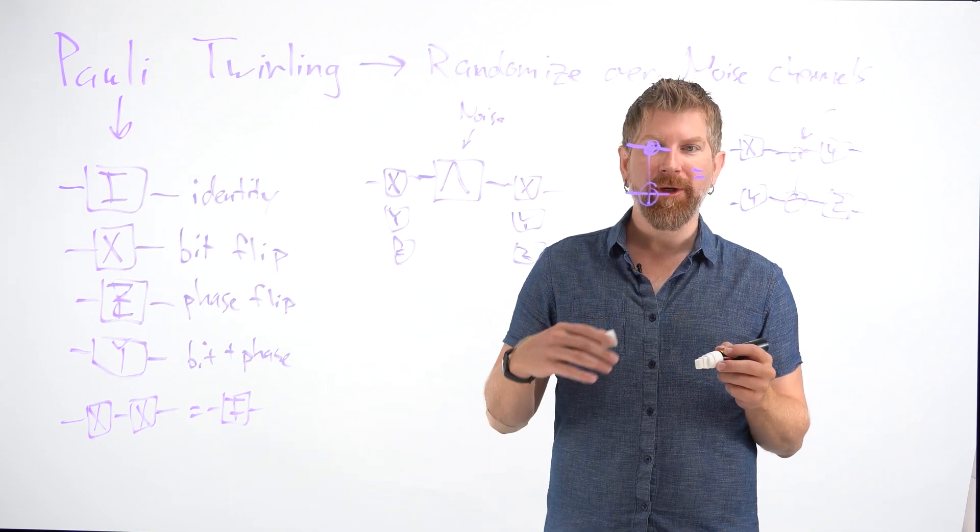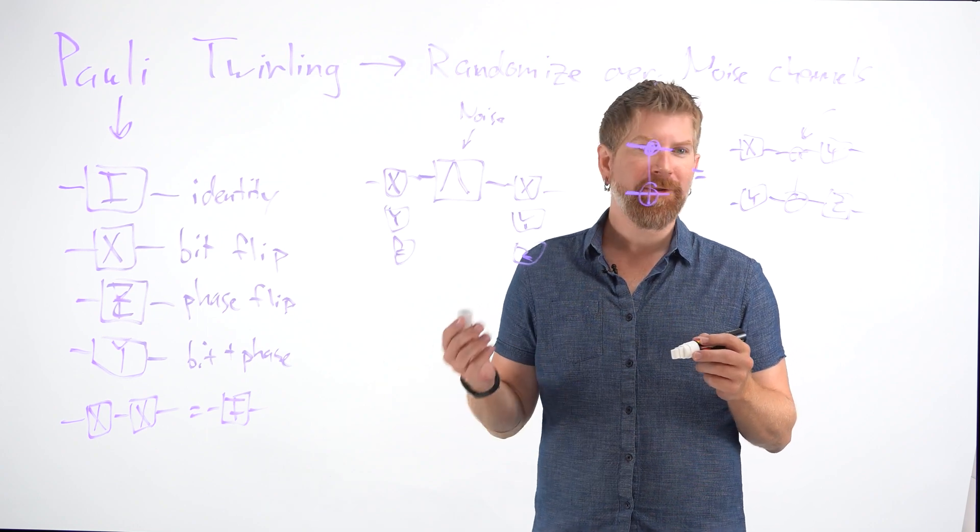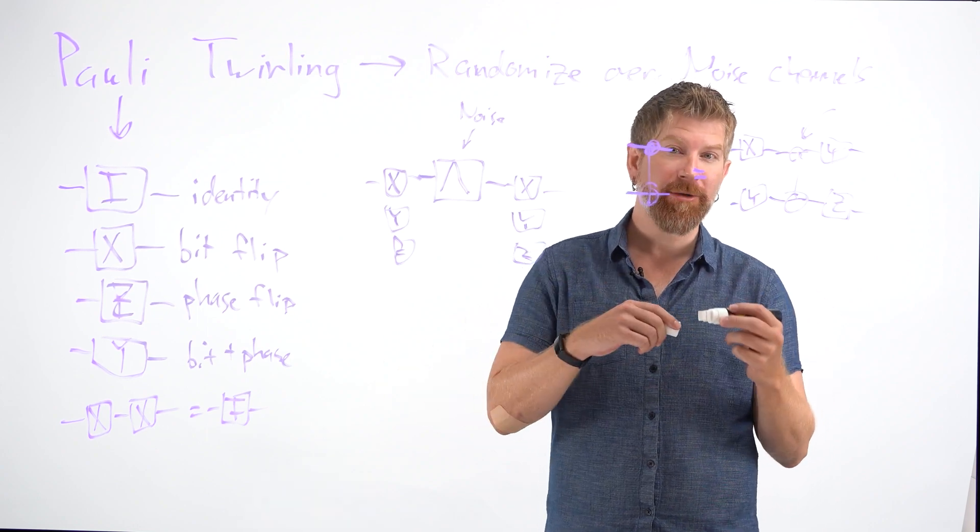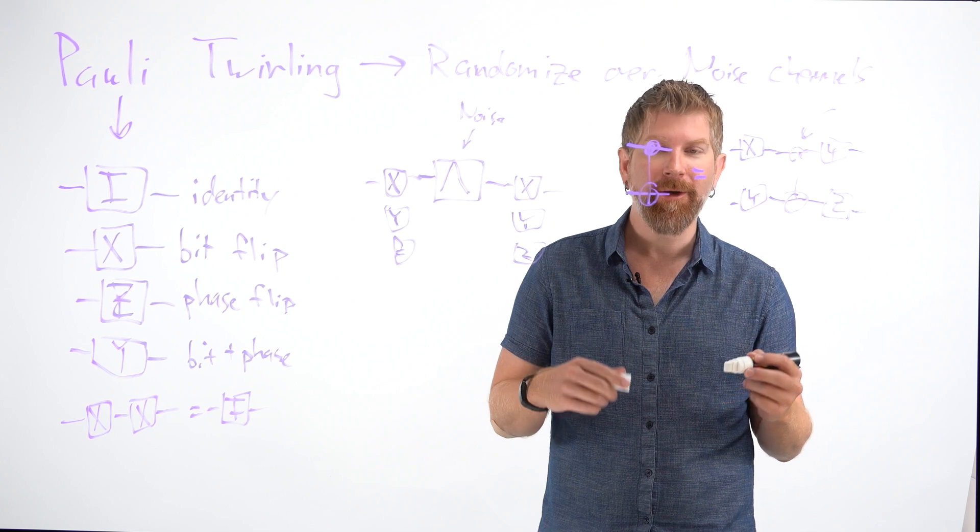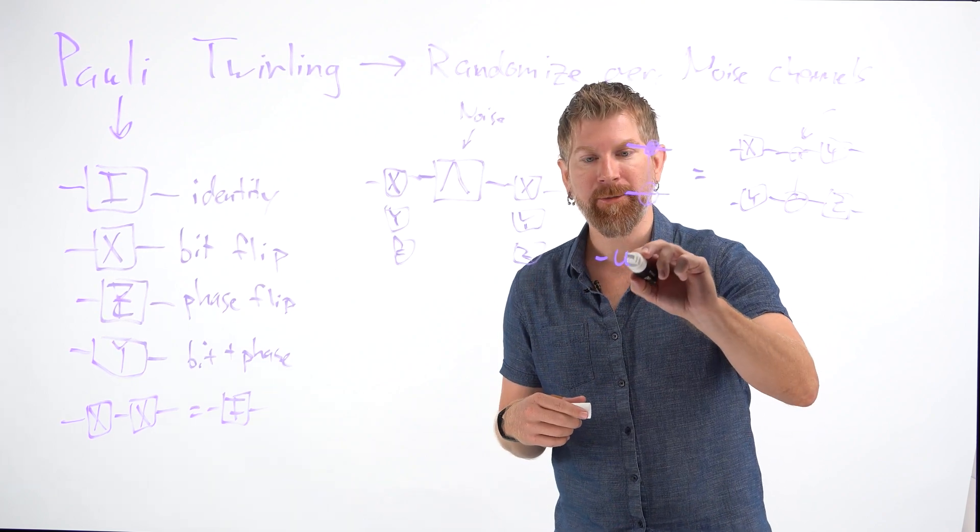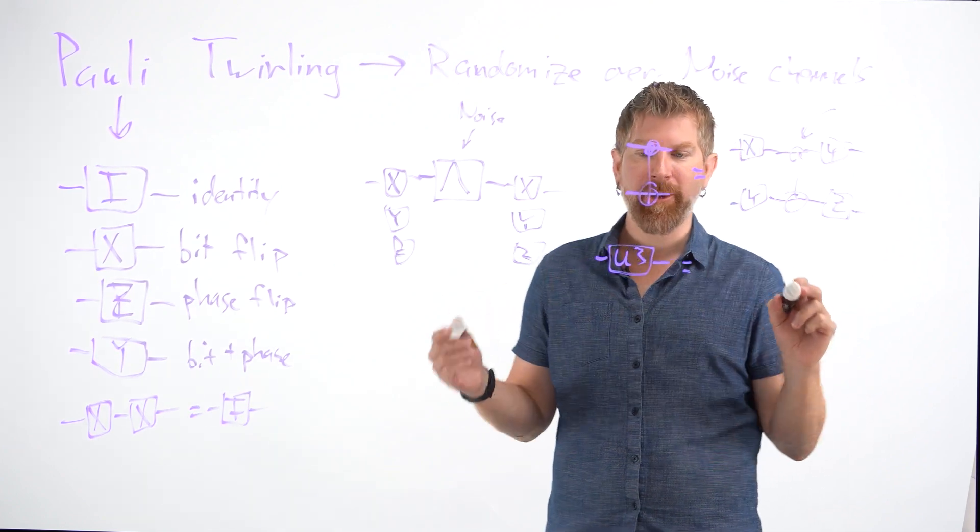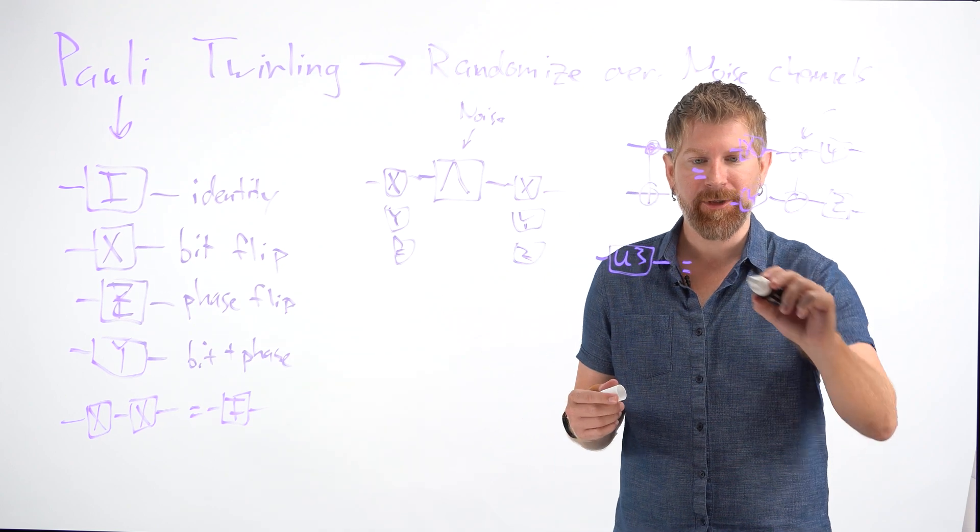The other thing is you might wonder, well, if I'm inserting more operations, then maybe I'm getting more noise. But that's actually not true because when we transpile the circuit down into something we can run on hardware, we get the benefit of composing down into something that should be expressible in, at most, two actual physical pulses. So we call these arbitrary single qubit gates U3s, for example.